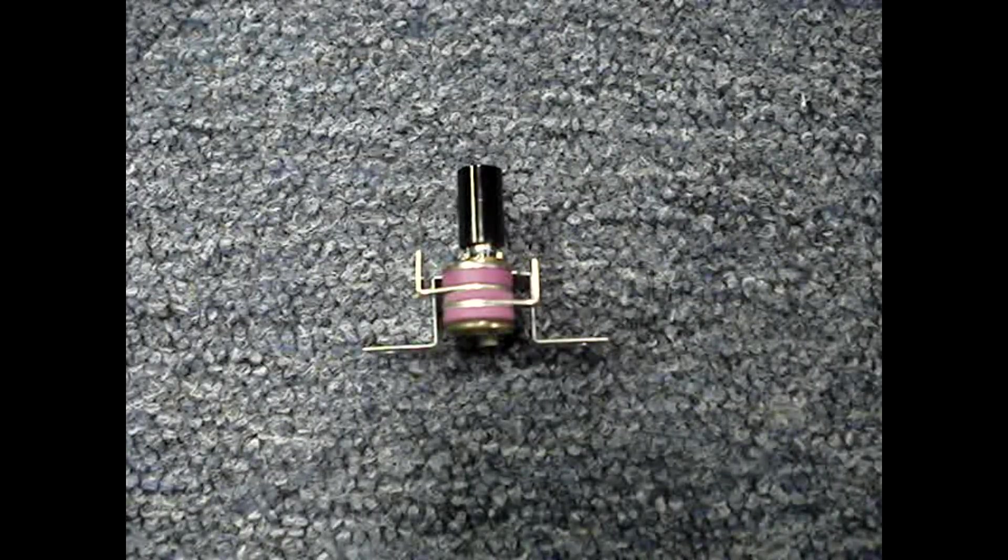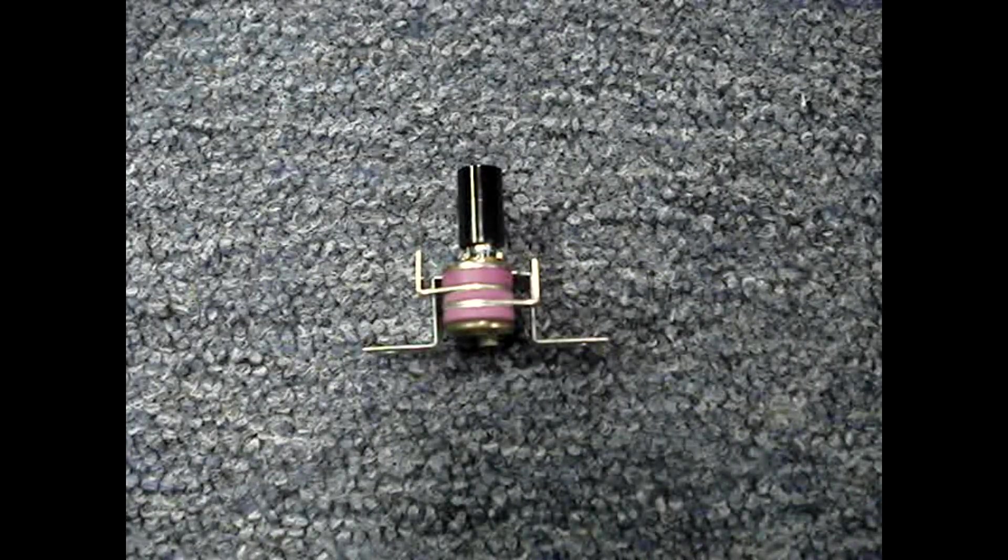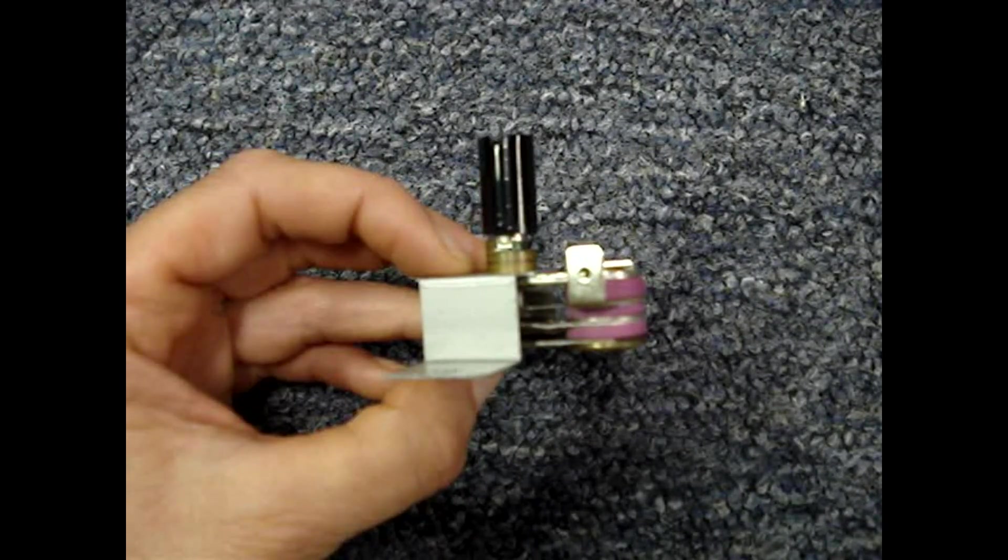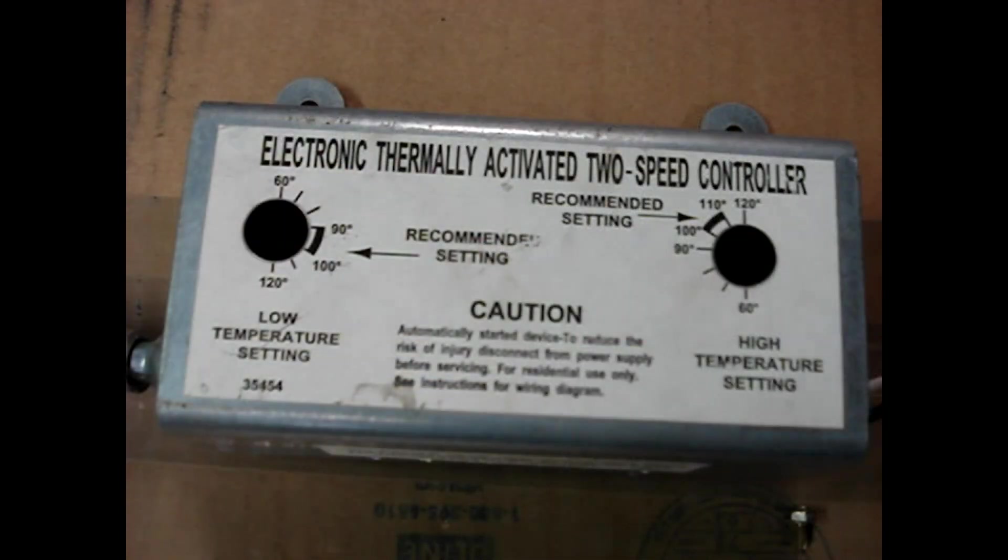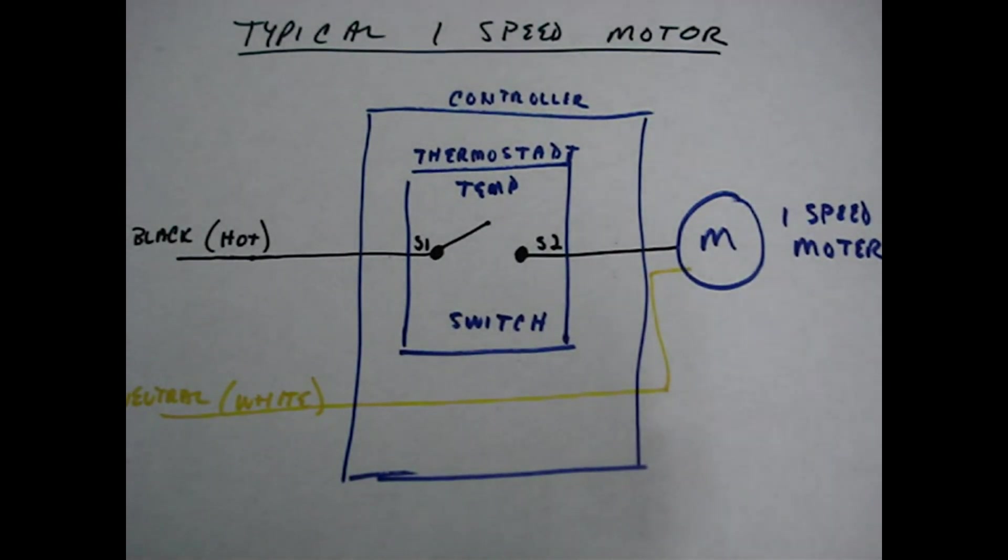The simplest kind of thermal sensor is the bi-metallic type. This is a bi-metal thermostat from an attic fan controller. Its job is to turn on the fan when the desired temperature is reached.